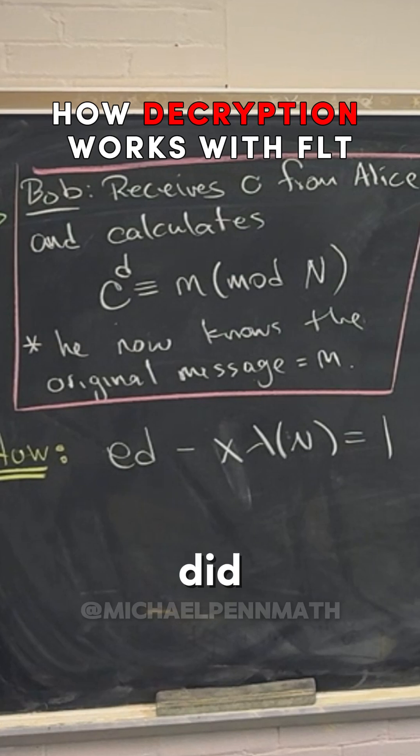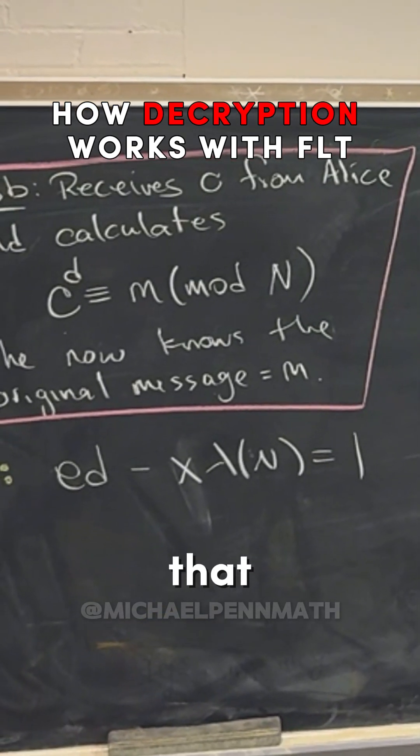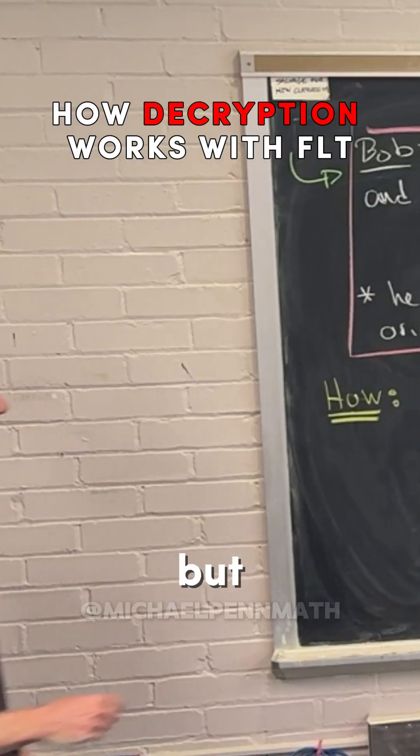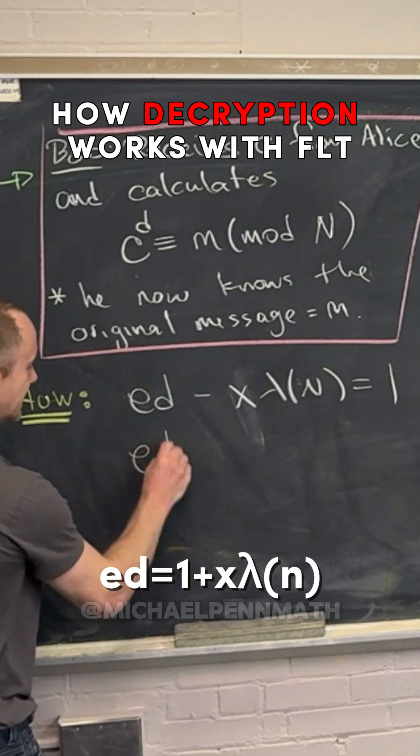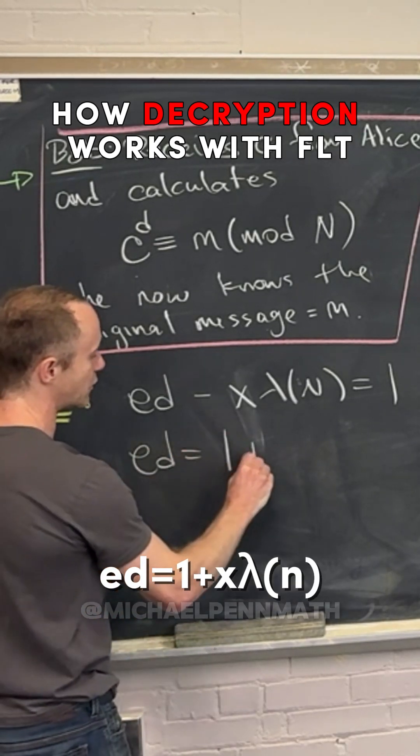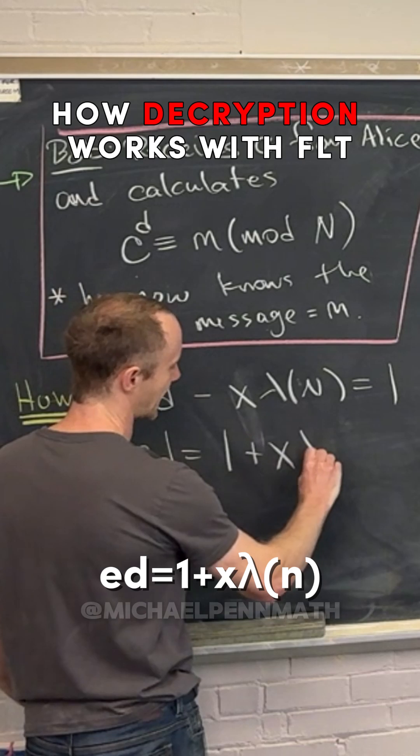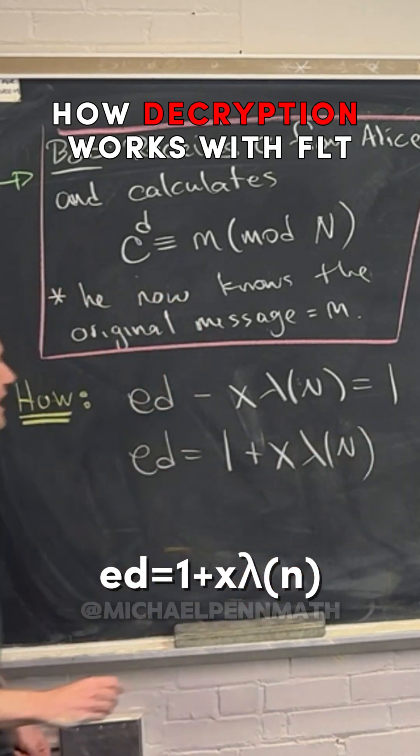So remember that originally Bob did that calculation. That was part of building the system. But notice that we can solve this for e times d. That means that e times d is equal to one plus x times lambda of n.